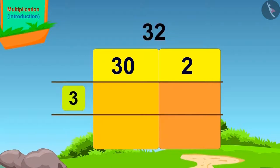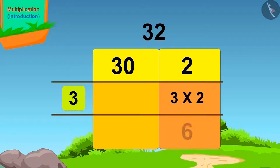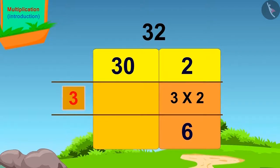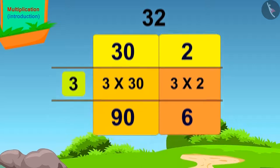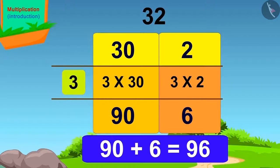The number we have to multiply 32 with is 3. We will write 3 here. Now we will multiply the first 2 by 3 — 3 times 2 is 6. We will write this answer here. Now we will multiply 30 by 3 — 3 times 30 is 90. We will write this answer here.